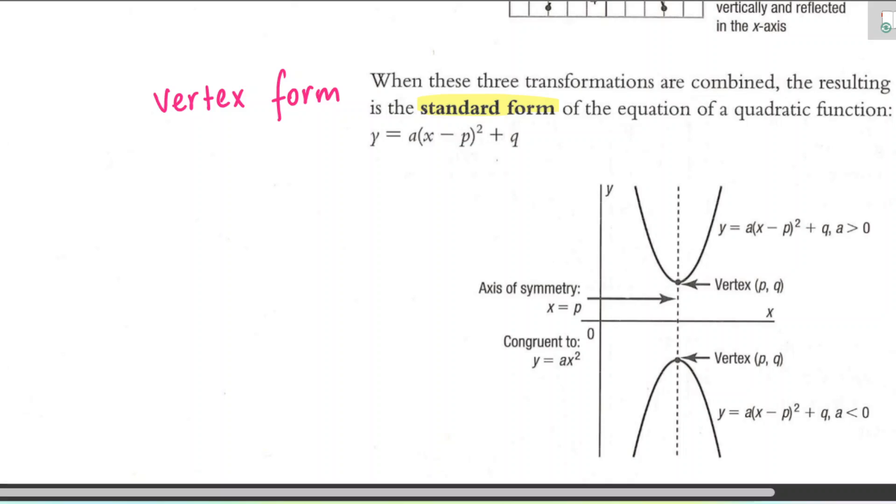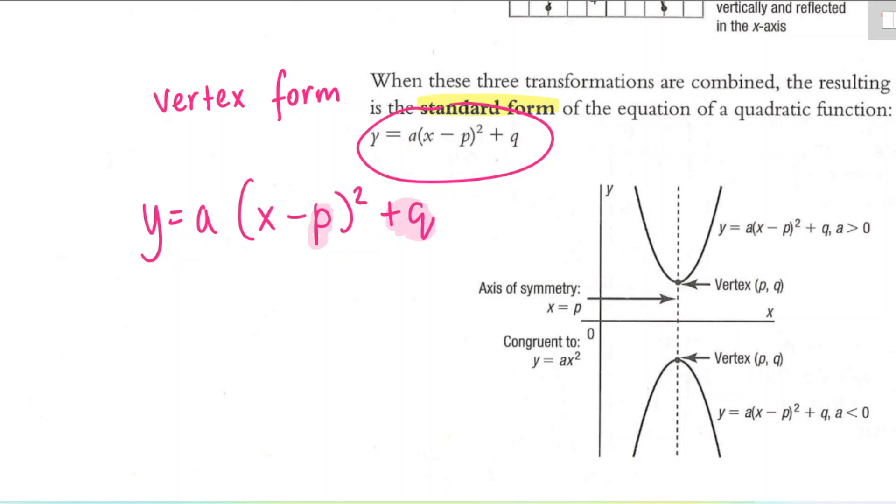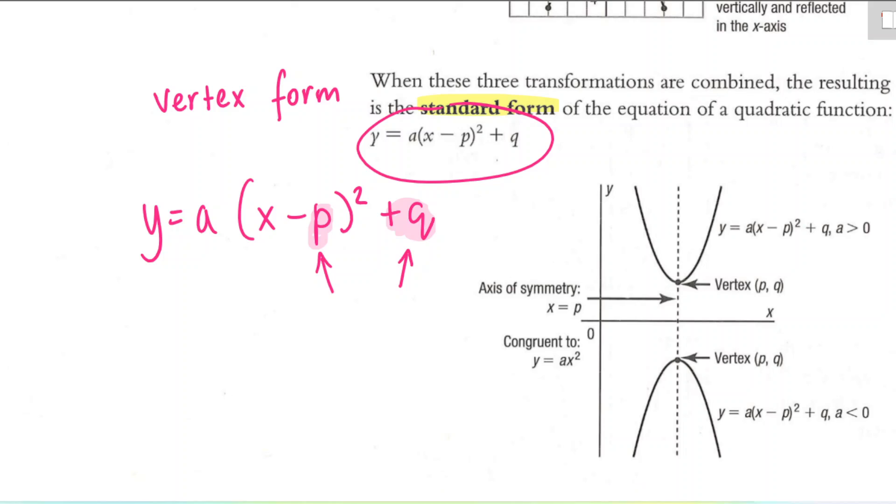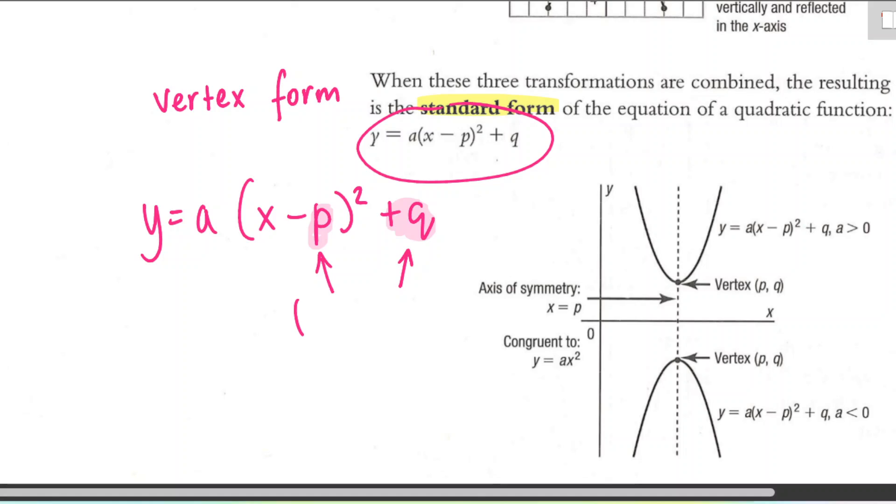And here it is. And the advantage of this format is you can tell a few things. So first thing you can tell is where the vertex is. Now, the vertex is going to be at PQ. So the x-coordinate of the vertex and the y-coordinate of the vertex are sitting right in the equation. I always like to remember that the x-coordinate is sitting right next to the x. So that's a good way to remember it. So the vertex is at PQ.